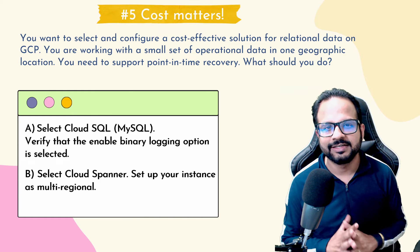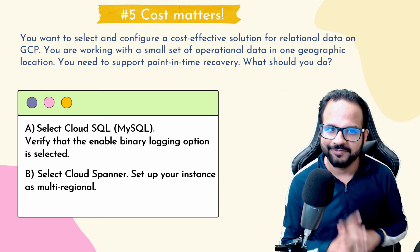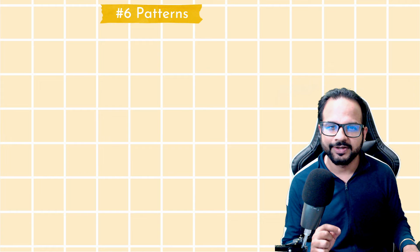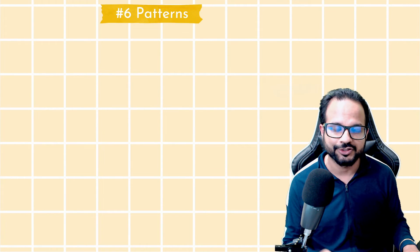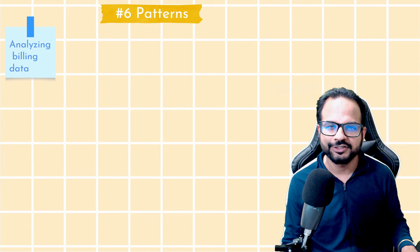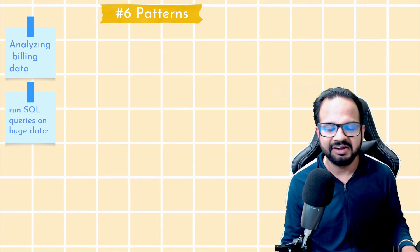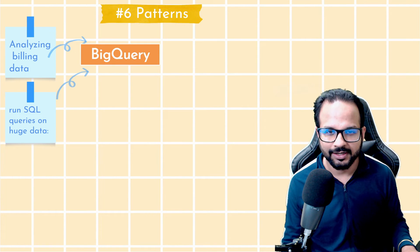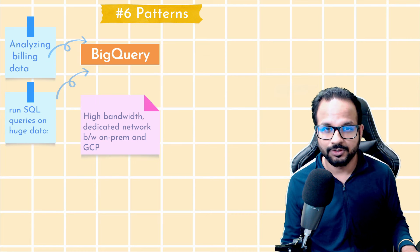Now that we've seen all five tips, it's time for our secret weapon. There are different patterns we can analyze, and based on those patterns it will be easier to answer questions. For example, whenever a question mentions analyzing billing data or running SQL queries on huge datasets, the answer 99% of the time would be BigQuery.